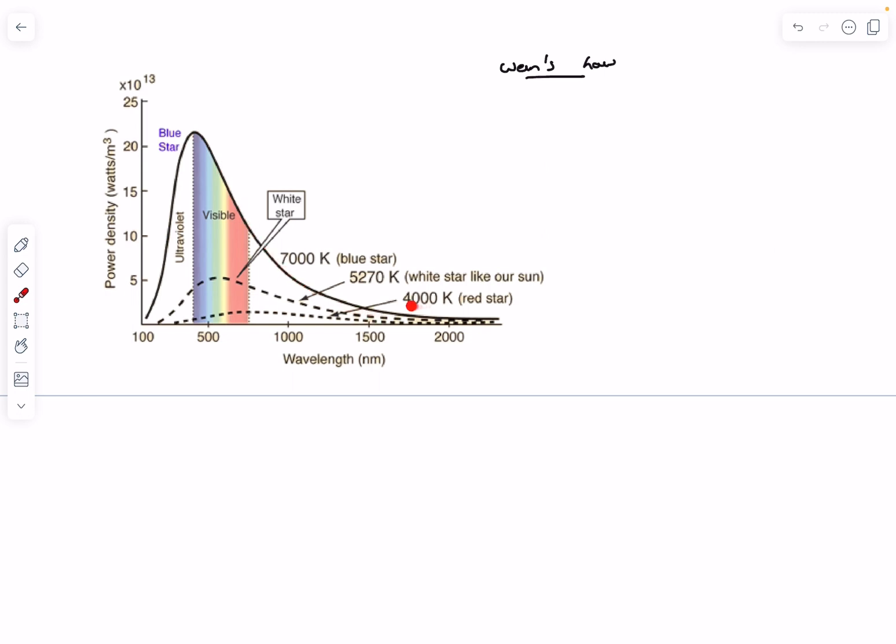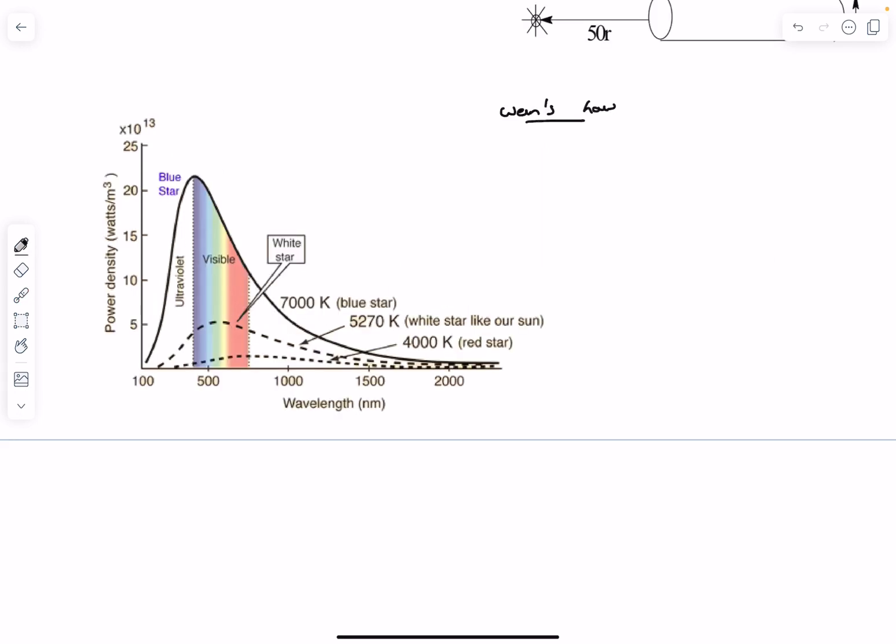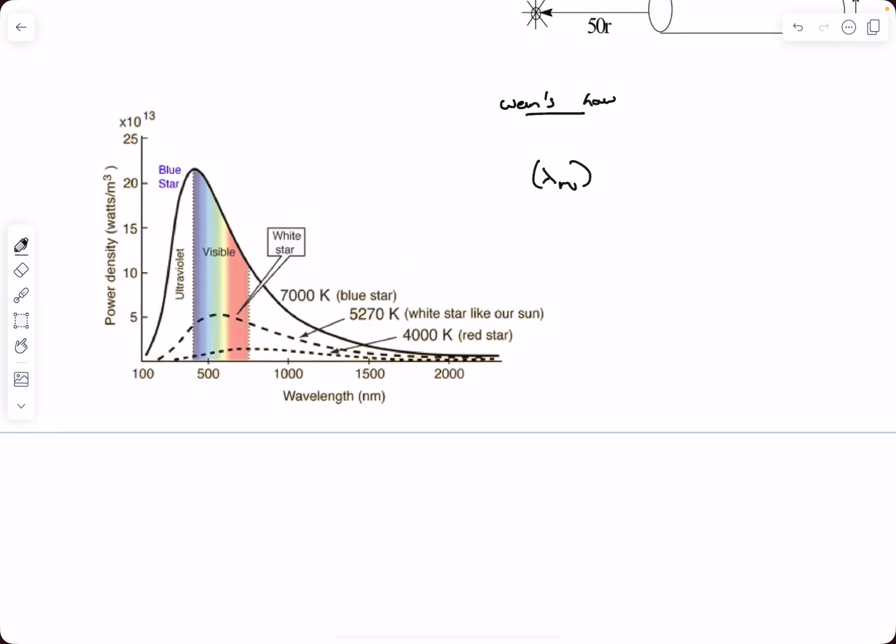As you can see, as the temperature increases, the peaks of these curves shift towards the left. So this is what Wien's Law essentially is. It's a relation between the wavelength emitted at maximum power density. So let's say the wavelength associated with the peak is lambda M. Wien's Law says that lambda M times the temperature equal to a constant, which is the Wien's constant.